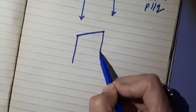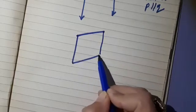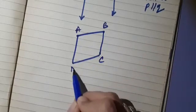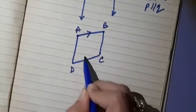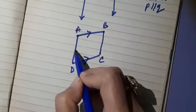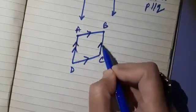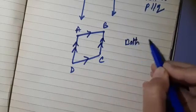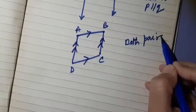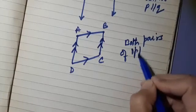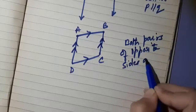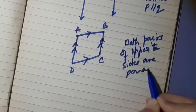This shape is a quadrilateral and a special one. The speciality is that AB is parallel to CD and AD is parallel to BC. So we can say both pairs of opposite sides are parallel to each other.